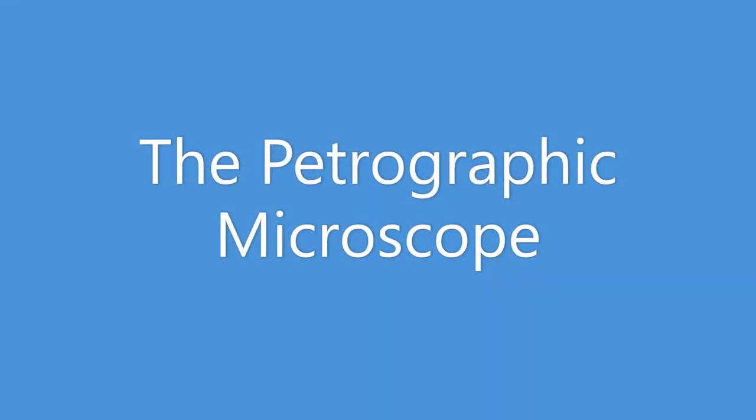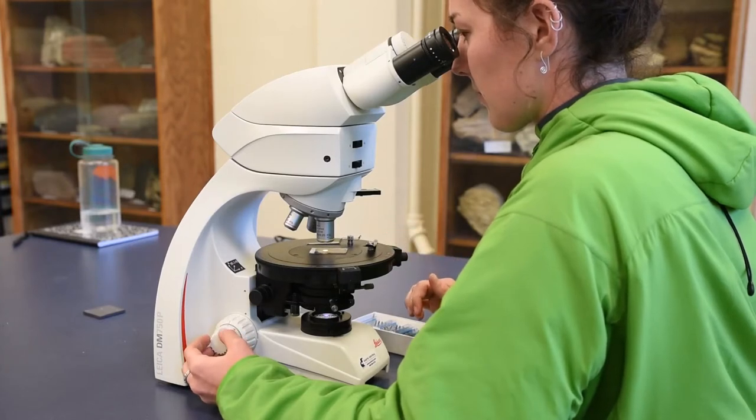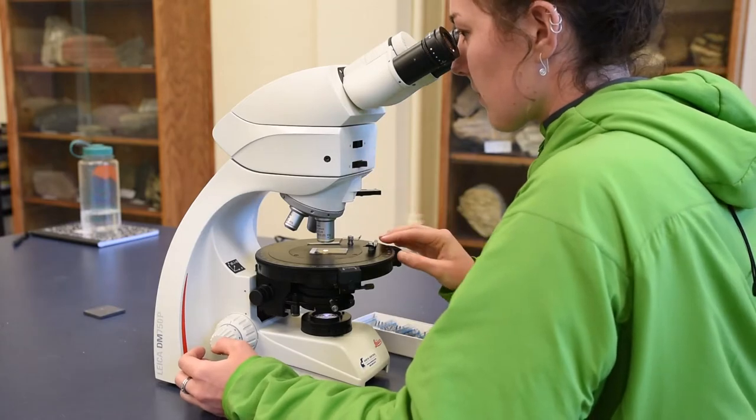Now that we have our thin sections, we use the petrographic microscope to take a look. What makes these microscopes special is they have two polarized filters.